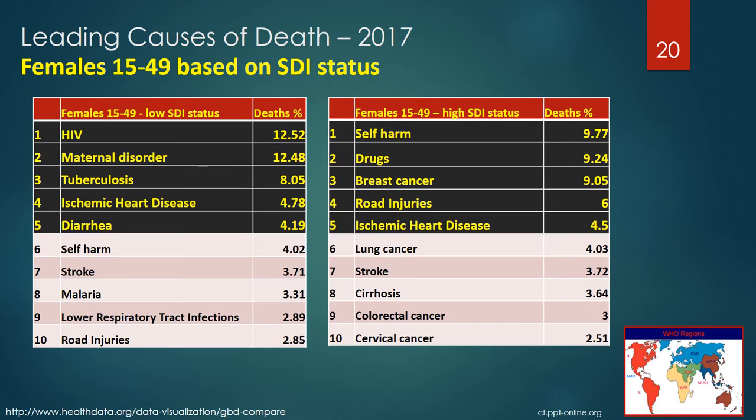These tables look at the global causes of death in females between 15 and 49 years old based on their SDI. The leading causes of death in low SDI countries were HIV, maternal disorders, tuberculosis, ischemic heart disease, and diarrhea. The leading causes of death in high SDI countries were self-harm, drugs, breast cancer, road injuries, and ischemic heart disease. For females in low SDI countries, HIV, tuberculosis, and diarrhea — infectious disease causes — are among the top 5 causes of death. Self-harm, drugs, and breast cancer lead the list for high SDI countries. Notice that cancer is not among the top 10 causes of death in females in low SDI countries.